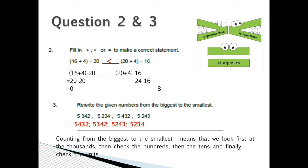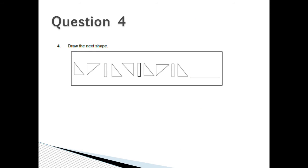Counting from the biggest to the smallest means that we look first at the thousands, then check the hundreds, and then the tens, and then finally check the units. Question 3: Draw the next shape. We have two right angle triangles and a rectangle, two right angle triangles and a rectangle, two right angle triangles and one rectangle. You need to fill in the next shape.